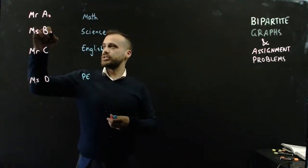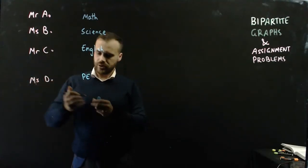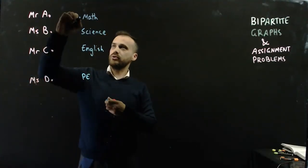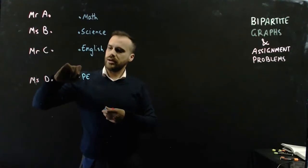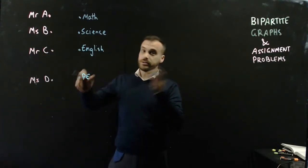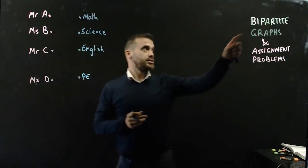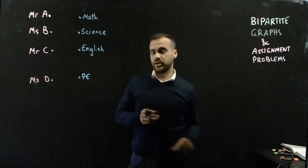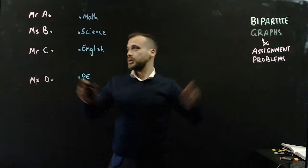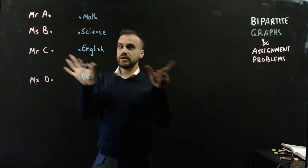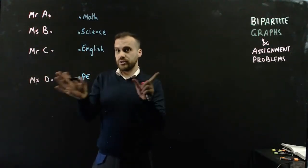So we have our four teachers here. It's a pretty small school. We have our four subjects here. Now, I'm coloring them two different colors for a very good reason, because this is what's called a bipartite graph. Bi meaning two, two different types of vertices.